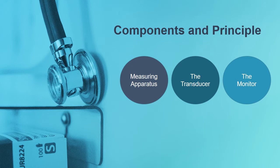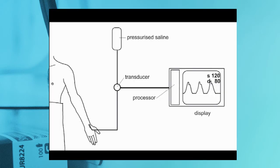The components and principle of arterial blood pressure monitoring are divided into three parts: measuring apparatus, transducer, and monitor. The measuring apparatus is the whole system of the arterial line. You can see a patient with a radial artery cannulated, directed through a transducer and then a processor to a display system on the monitor, along with a pressurized saline bottle. The transducer must be placed at the level of the patient's heart — this is a key point. If the patient is propped up, you must reposition the transducer accordingly.